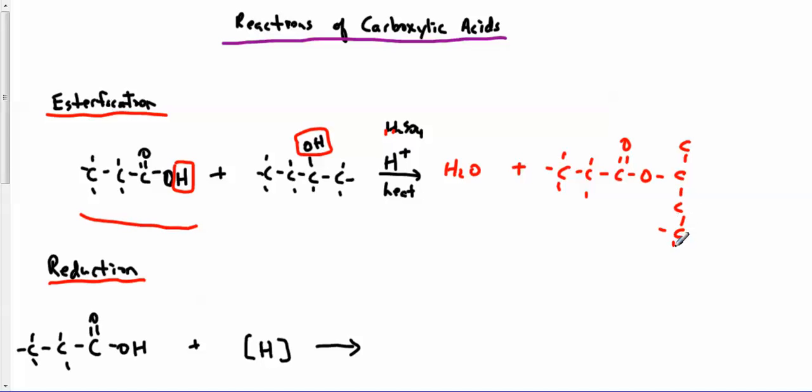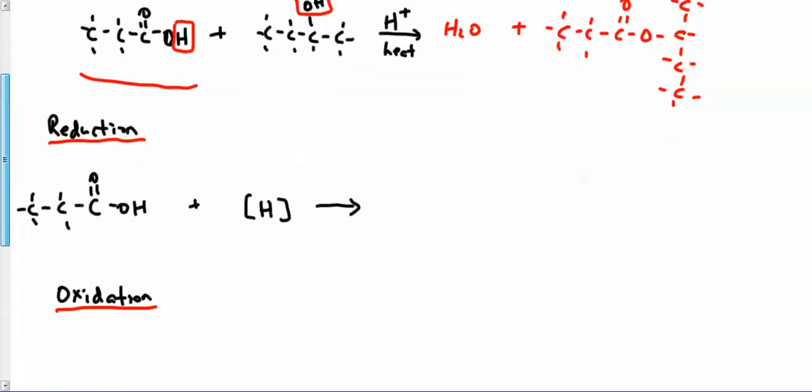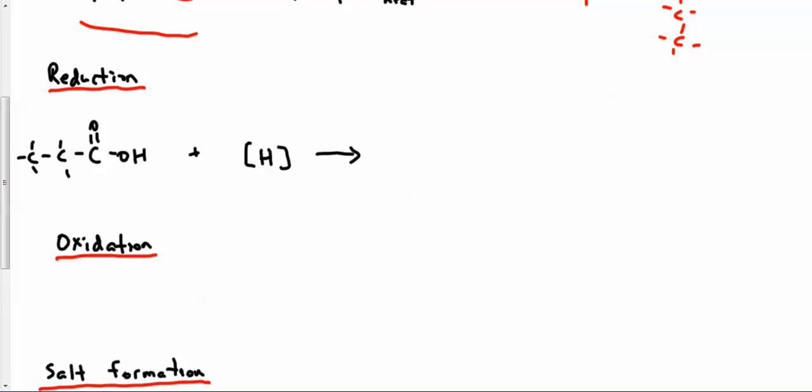So I've made an ester and water. Esterification. These things can also be reduced. Currently I'm making three bonds to O. More or, sorry, reduction I'm going to make less bonds to O. So less would be two bonds to O or one.